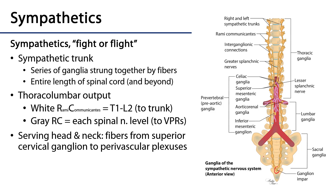Sympathetics are often referred to as the thoracolumbar division because their output — meaning their white rami communicantes, which supply the sympathetic trunk with preganglionic sympathetic fibers — is from the T1 to L2 vertebral level. From the trunk, fibers can return back to spinal nerves via gray rami communicantes, which exist at every level of the spinal cord, in stark contrast to the white rami communicantes that are limited to T1 through L2.